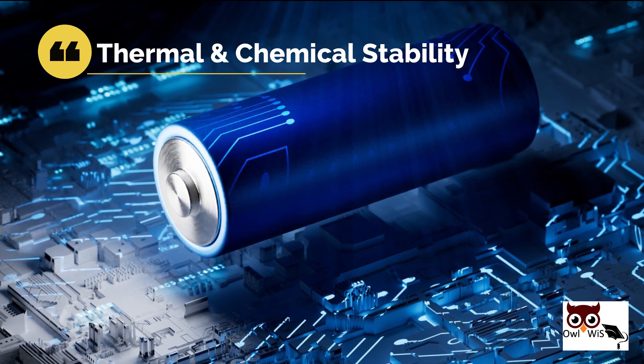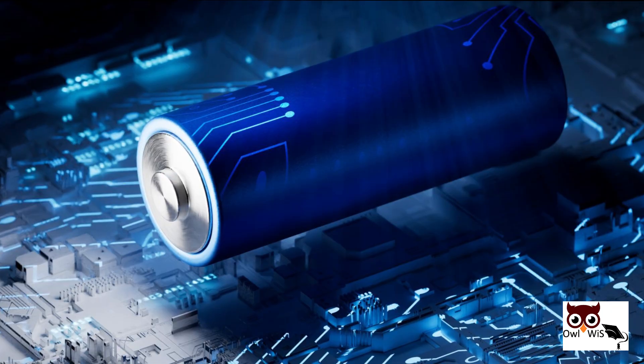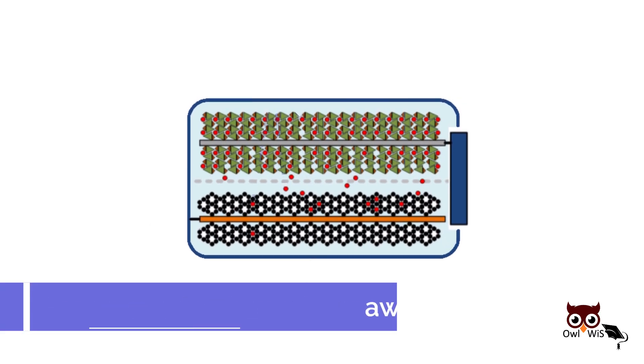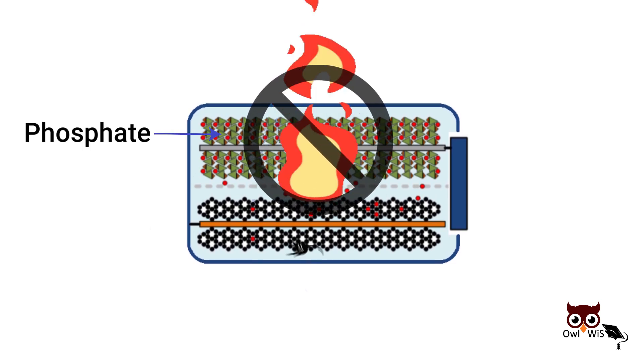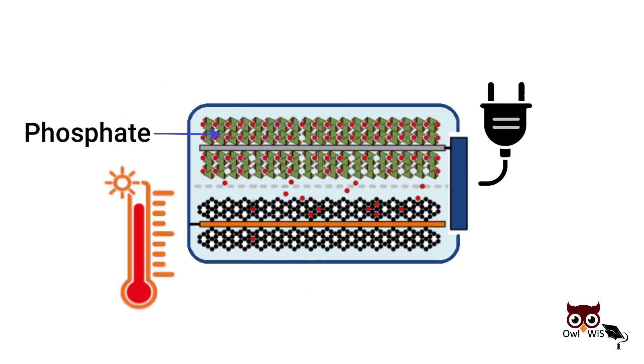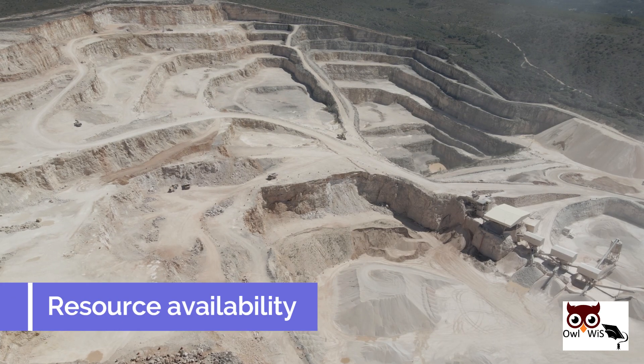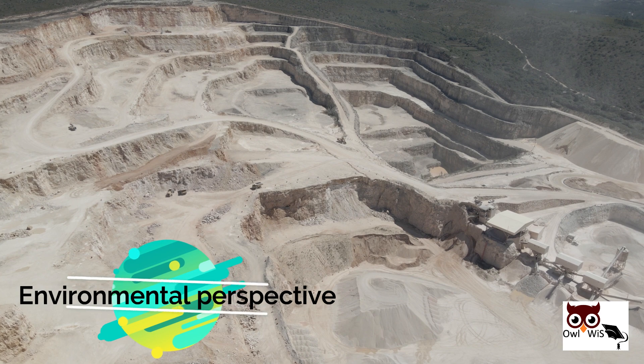One important advantage over other lithium-ion chemistries is thermal and chemical stability, which improves battery safety. Lithium iron phosphate does not normally experience thermal runaway, as the phosphate cathode will not burn or explode during overcharging or overheating, as the battery remains cool.